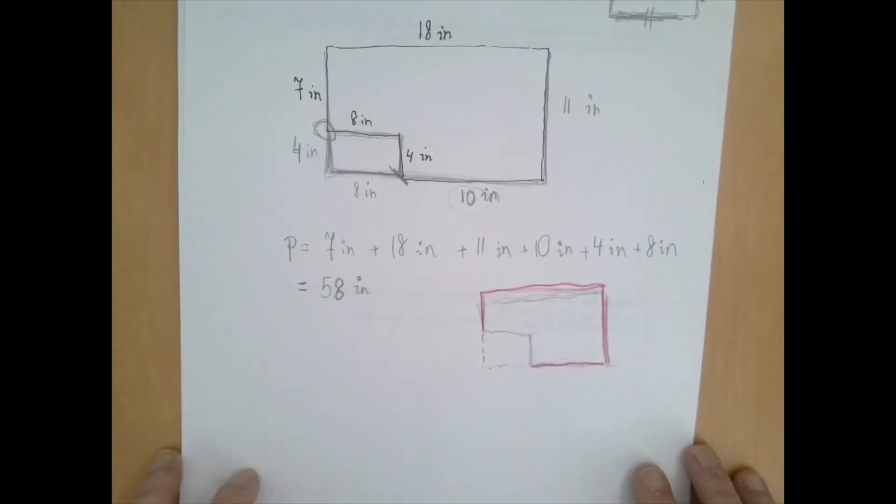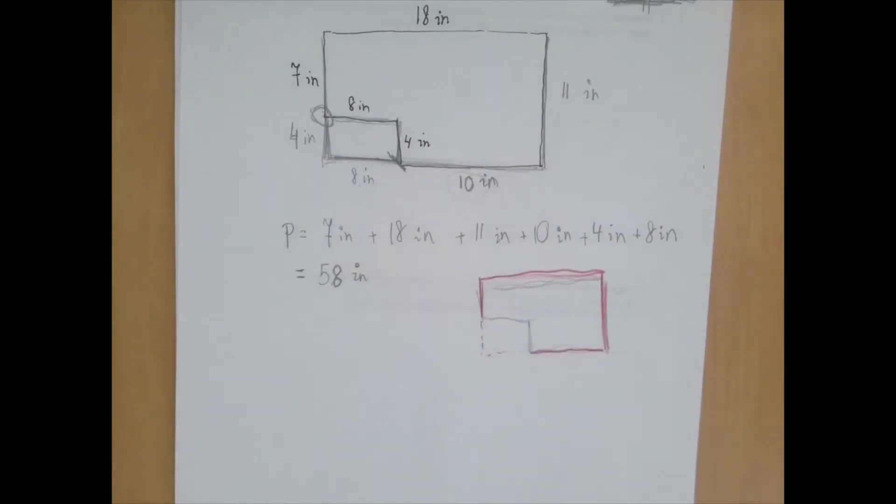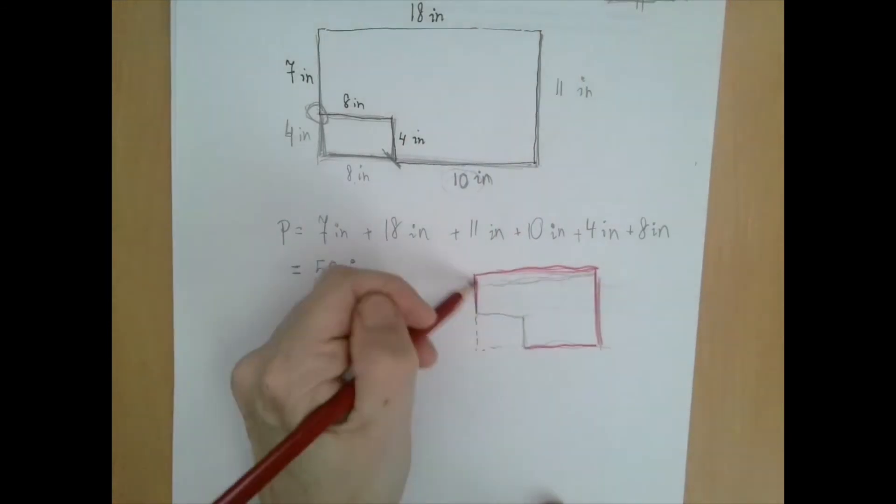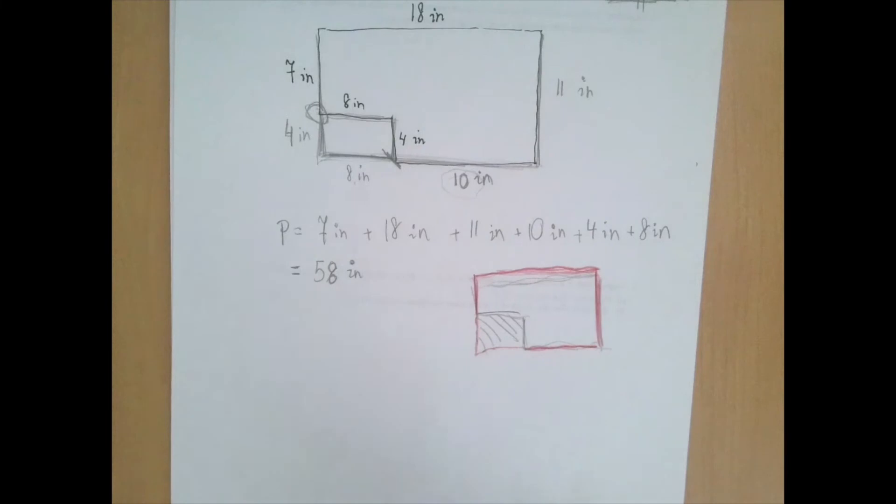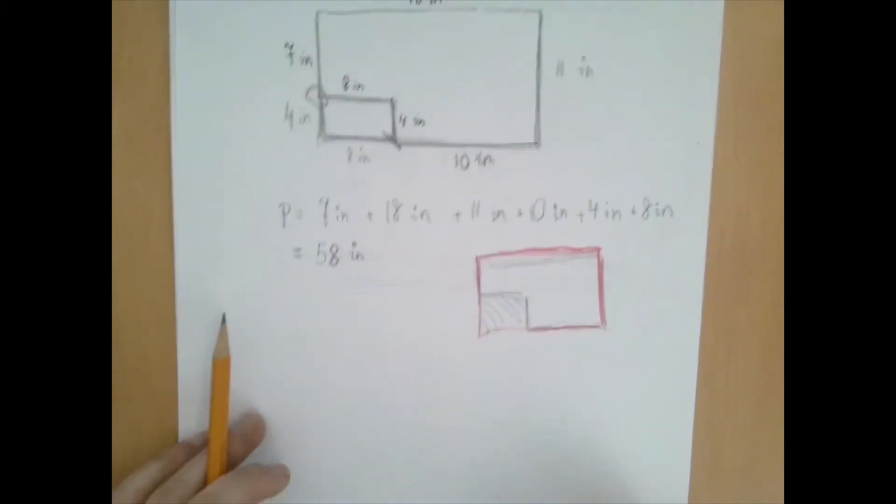For the area, we can look at this problem in two different ways. One way would be sort of a subtraction. Someone took the entire rectangle and then removed a smaller rectangle. So that would be find the area of the big rectangle, find the area of the smaller rectangle, and subtract. That's one way. Let's do it that way.